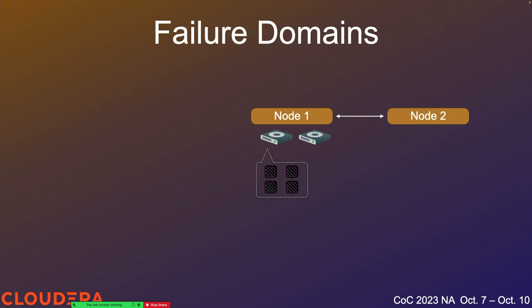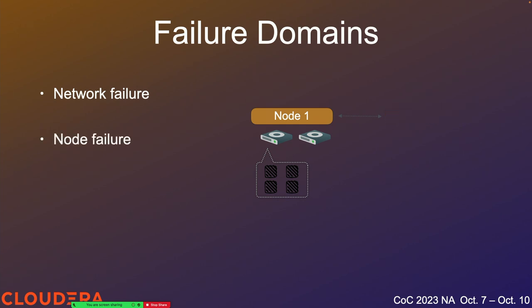First, let's quantify the types of failures we're going to talk about. The first is network failures — this is when one node in the system can't communicate with another. This could be a temporary network issue that resolves itself after a short amount of time, or a more serious network partition where the two nodes are unable to communicate for an extended period but both processes are still running. This is closely related to the next failure: full node failure.